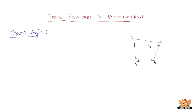Now let me make a list of opposite angles. Angle A and angle C are opposite angles, and angle B and angle D are opposite angles. So these are the two pairs of opposite angles in quadrilateral ABCD.